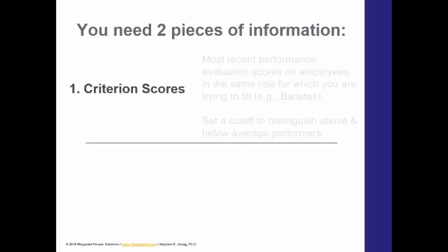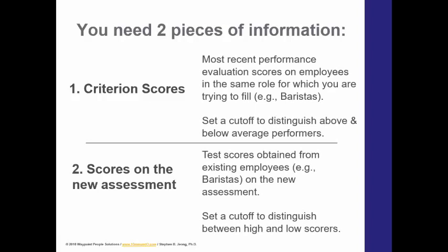You need two pieces of information: the criterion scores and scores on the new assessment. Before you can actually employ the new assessment, you'll want to gather information to validate its accuracy. One way to do this is what's called concurrent validation — you administer the assessment to your existing employees, who are likely to have performance evaluation data. This gives you two pieces of information: their performance evaluation scores (criterion scores) and their scores on the new assessment.